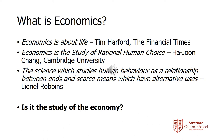Let's go back further and see if we can find a definition more like what you were expecting to hear. Lionel Robbins wrote the book An Essay on the Nature and Significance of Economic Science back in 1932. In this book, he says economics is the science which studies human behaviour as a relationship between ends and scarce means which have alternative uses.